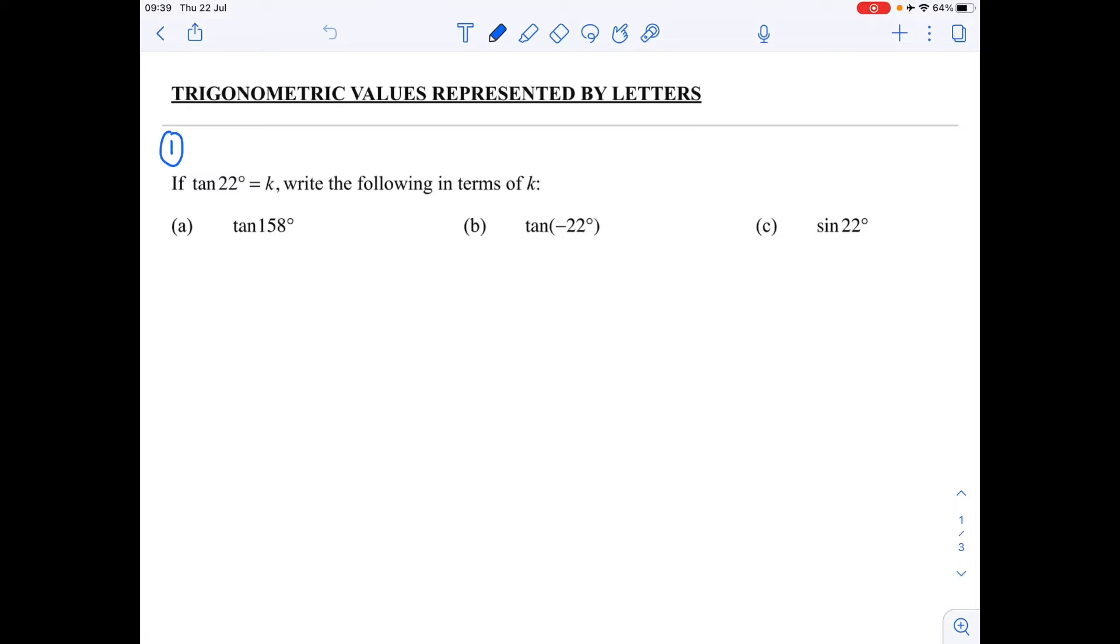When they have for example, if we look to k, write the following in terms of k. So my answer must just have k's in it. So we look at the first one. The only thing we've got is that tan of 22 is equal to k. So we've got to get everything back to 22.